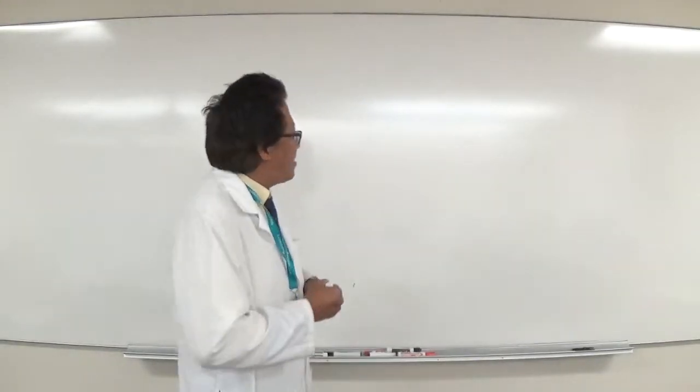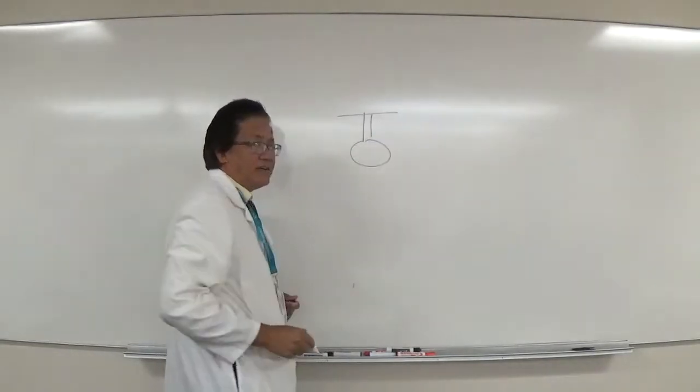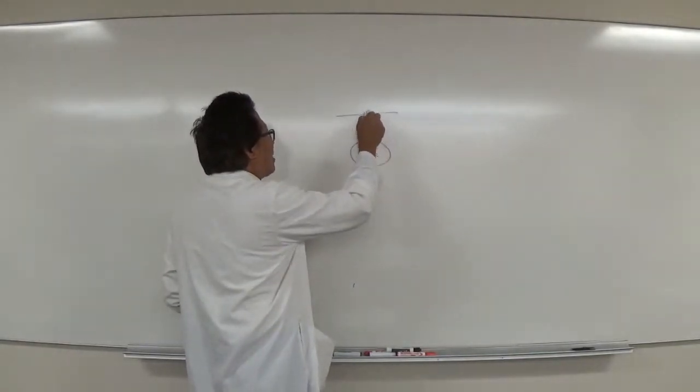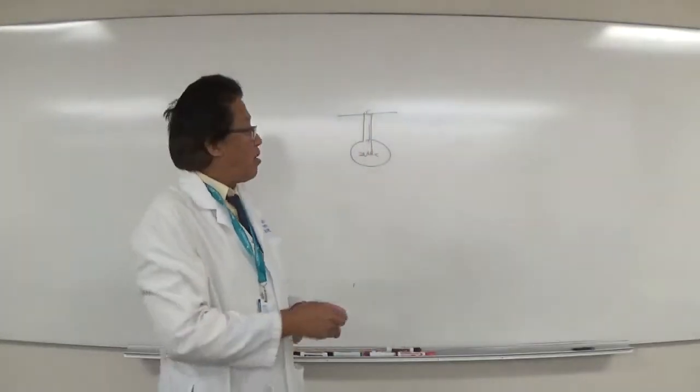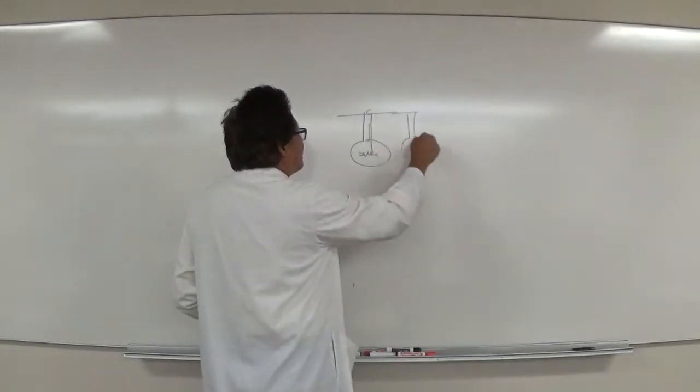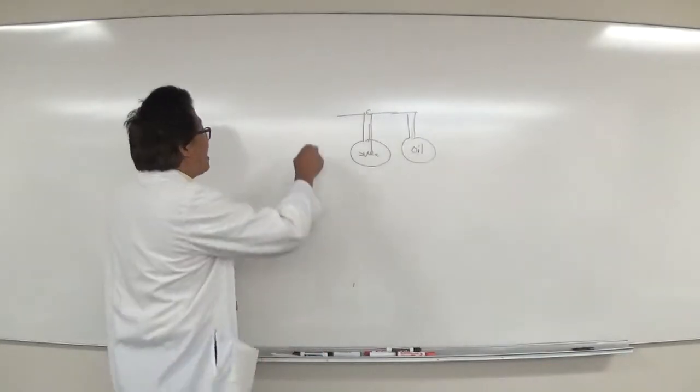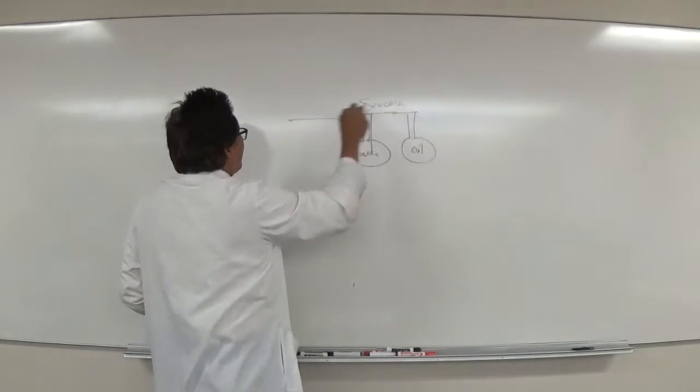Today we're going to have a teach-back on conditions mostly affecting the endocrine system and GI tract. An endocrine gland has no ducts, while an exocrine gland has ducts. For example, the sweat gland and oil gland release their secretions through ducts onto the surface of the skin — those are exocrine glands.